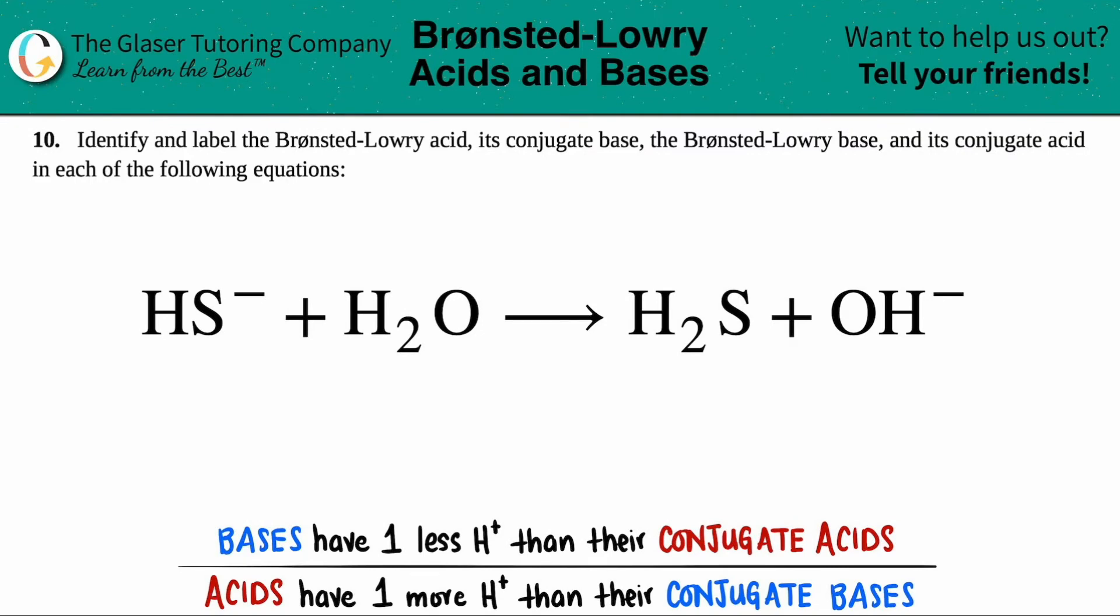Number 10, identify and label the Bronsted-Lowry acid, its conjugate base, and then the Bronsted-Lowry base and its conjugate acid in each of the following equations. And then we have this one right here. So we have HS minus plus H2O yields H2S plus OH minus, and we have to find out these four things.